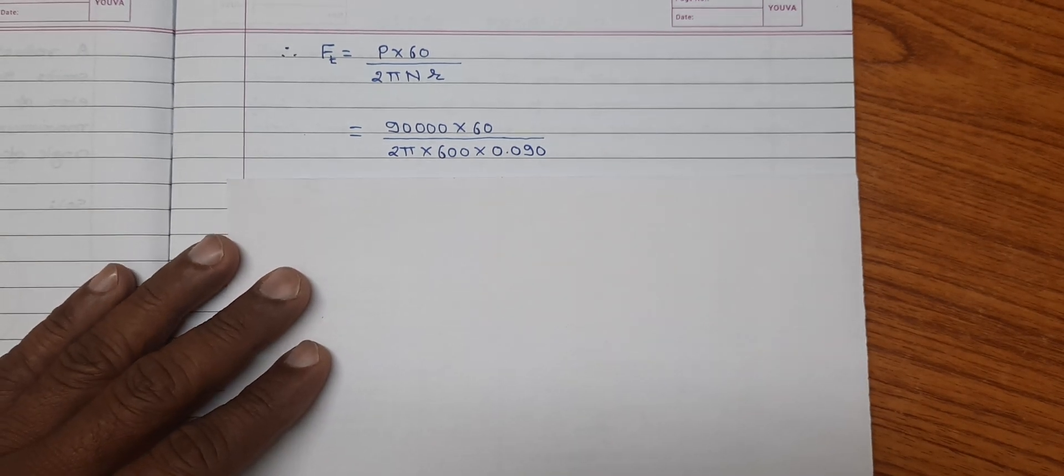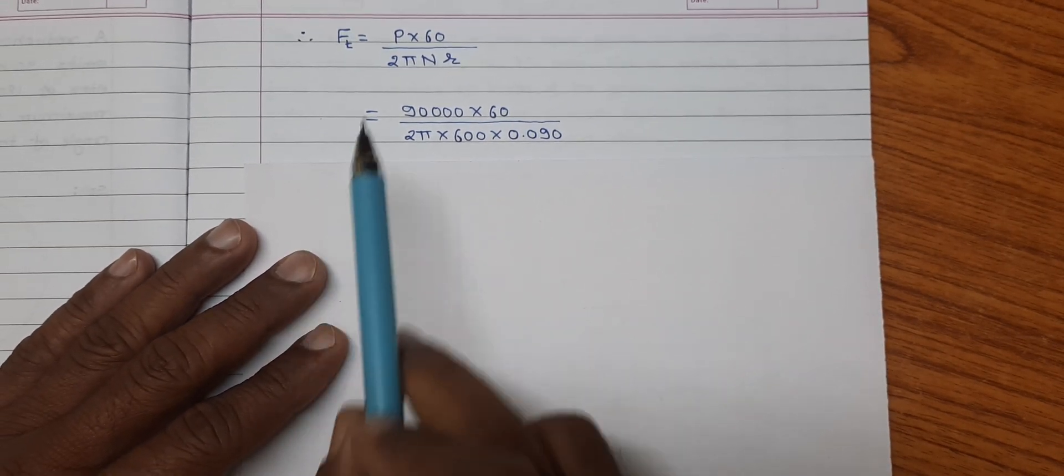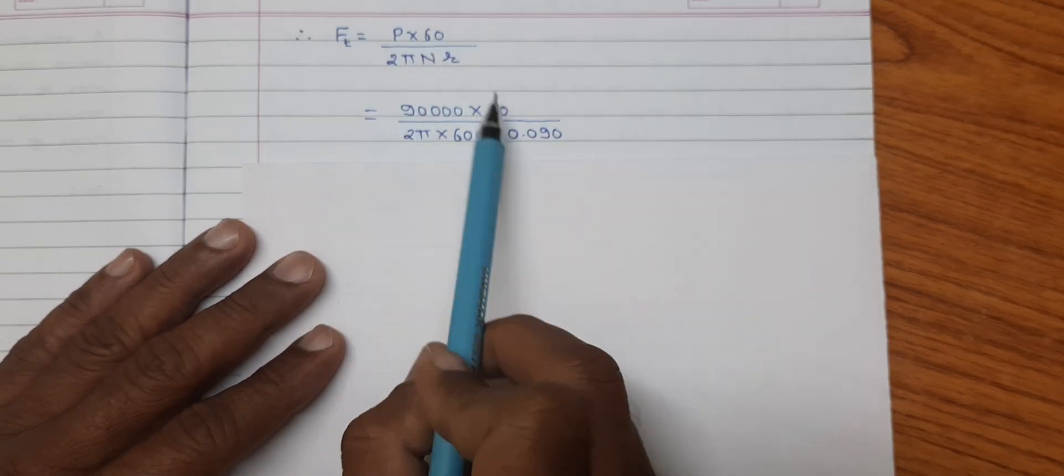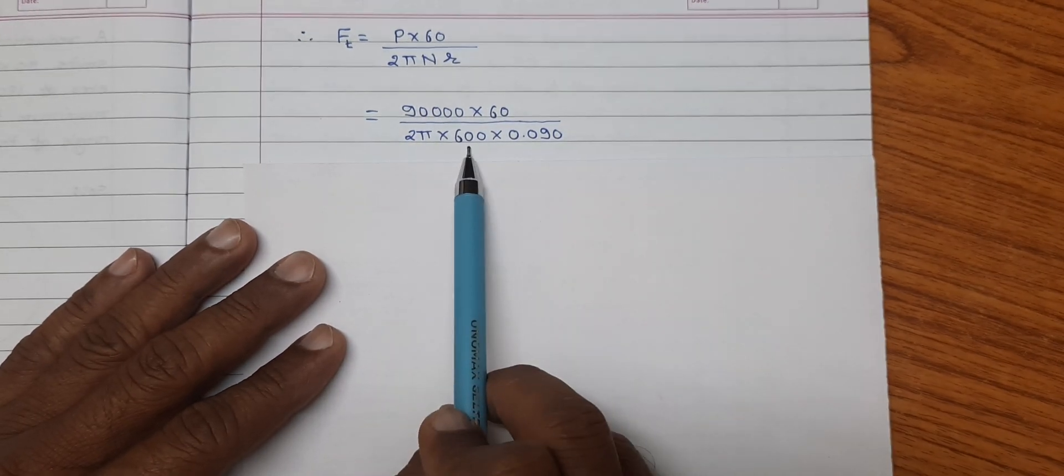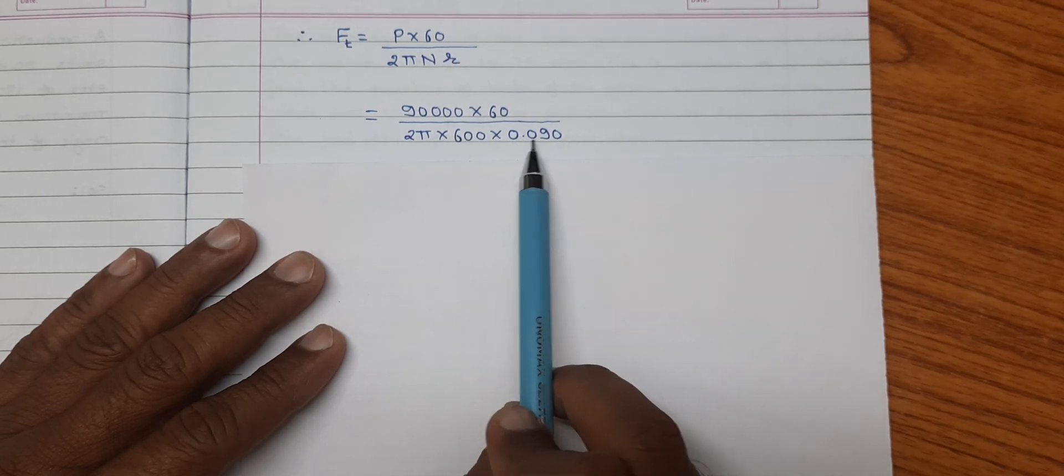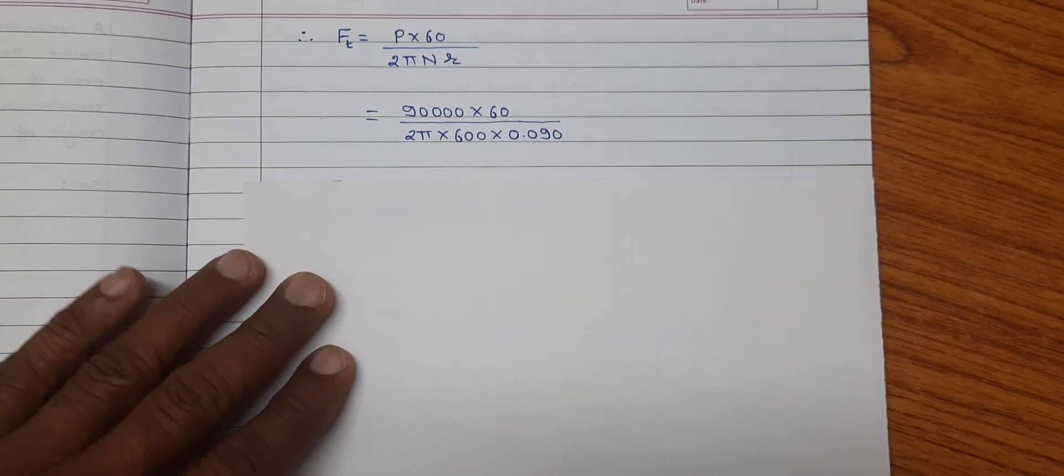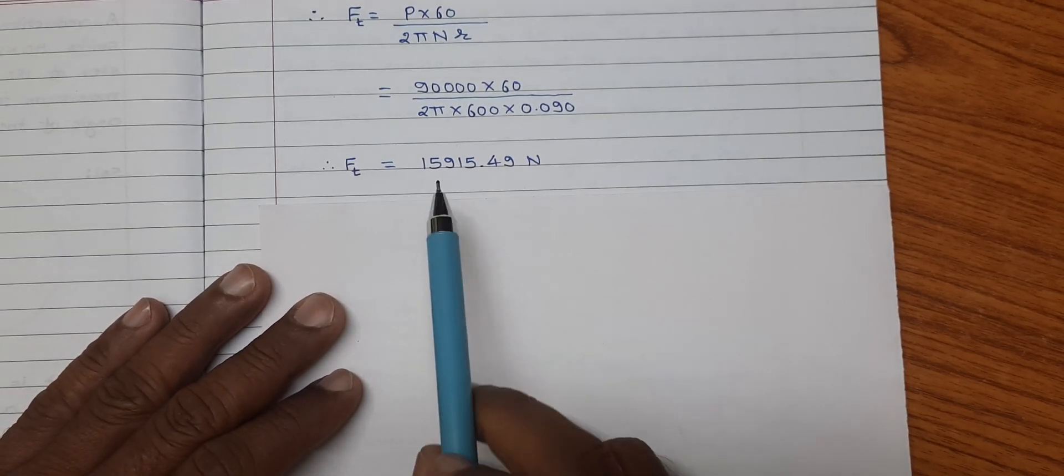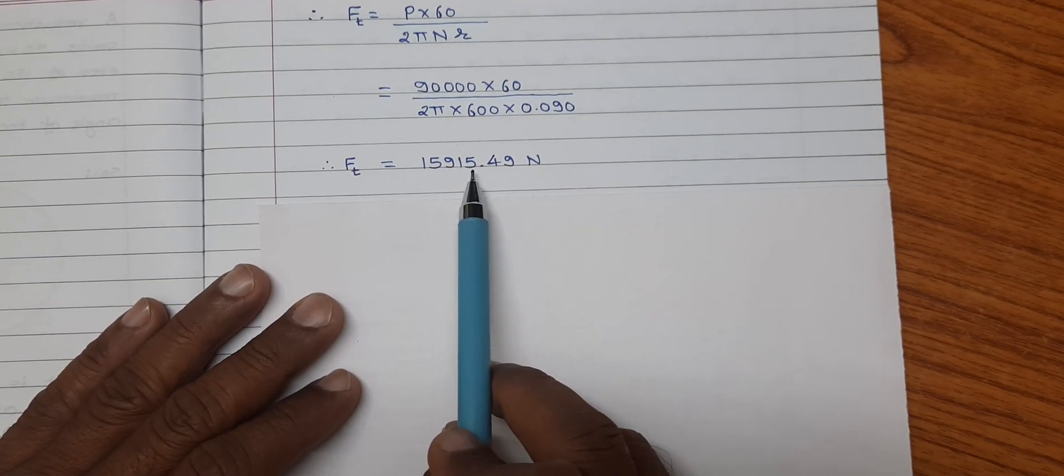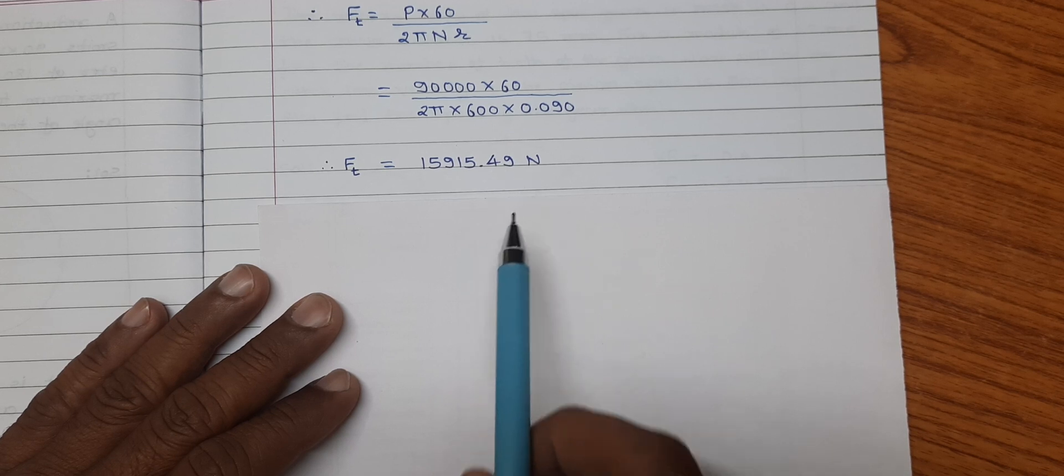On substitution of values, P is equal to 90,000 into 60 divided by 2π into N is equal to 600 and r is equal to 0.090. We found the tangential force acting is equal to 15915.49 newton.